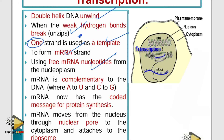Messenger RNA is complementary to DNA, whereby A pairs with U and C pairs with G. The messenger RNA now has recorded information for protein synthesis.